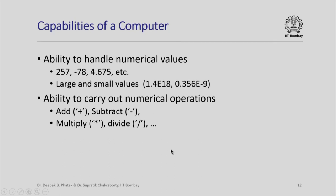This might be fun, but this is what we need to remember when we deal with a computer. Let us now look at the capabilities of a computer. A computer has the ability to handle numerical values — for example, values such as 257, or minus 78, or 4.675. It can also handle very large and very small values. For instance, 1.4e18 actually means 1.4 multiplied by 10 to the power 18, and 0.356e-9 means 0.356 multiplied by 10 to the power minus 9. A computer is capable of dealing with such very large and very small values, subject to a limited precision as we shall see later.